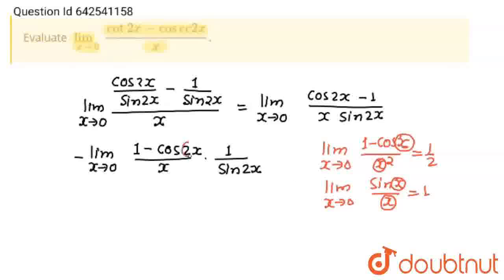See, 1 minus cos, here it is 2x but here it is x. So there is not 2. So I am going to multiply and divide this whole term by 2. Okay, now no problem.